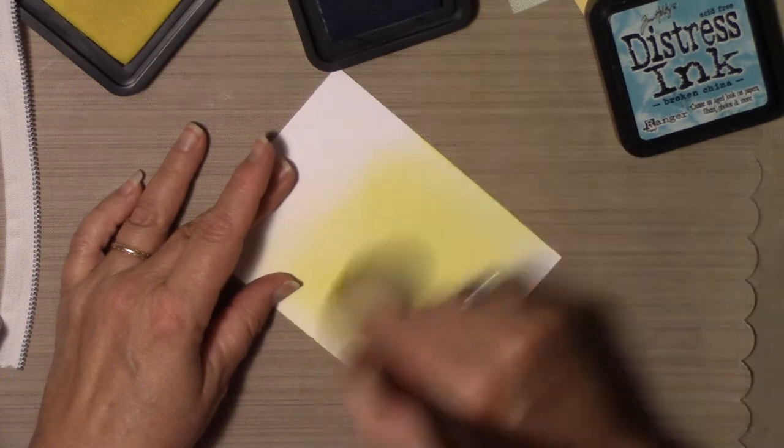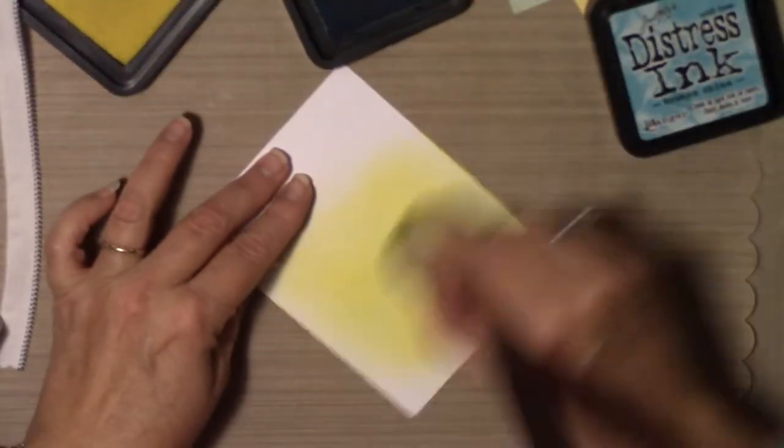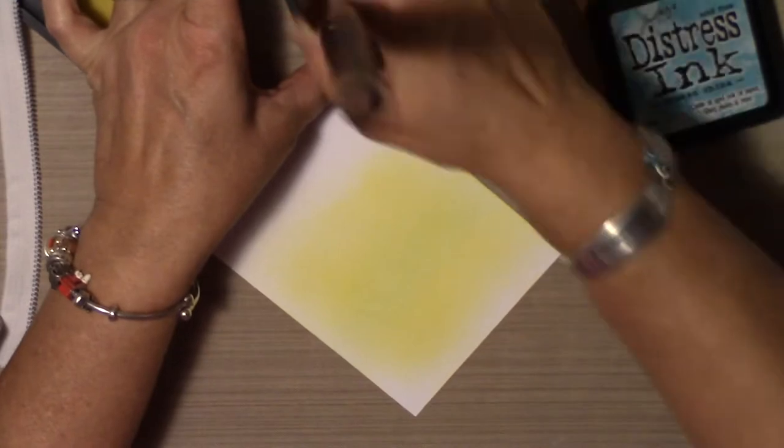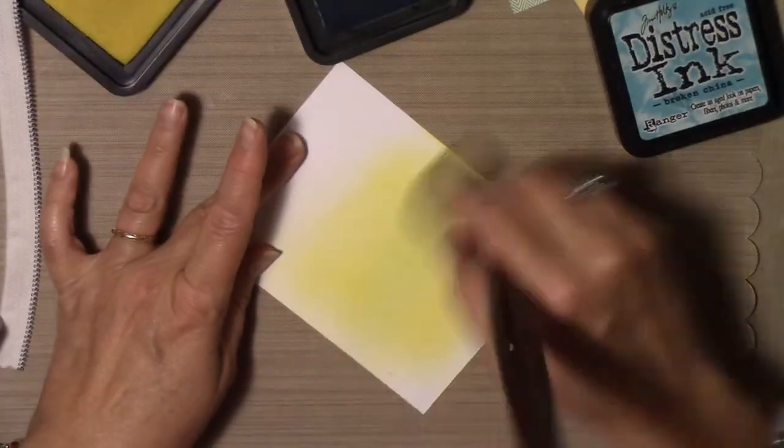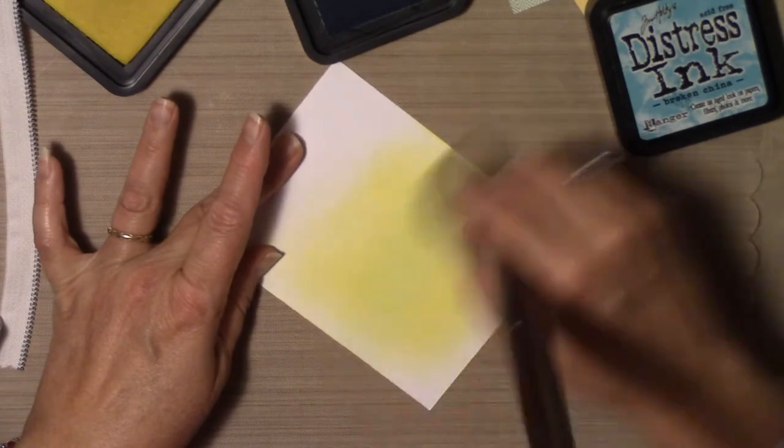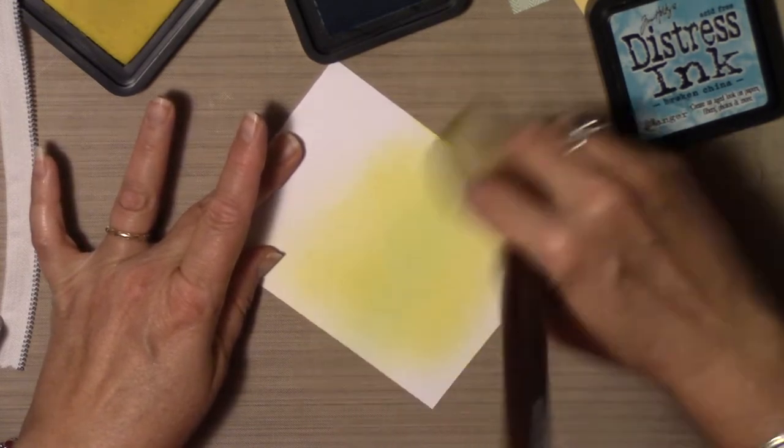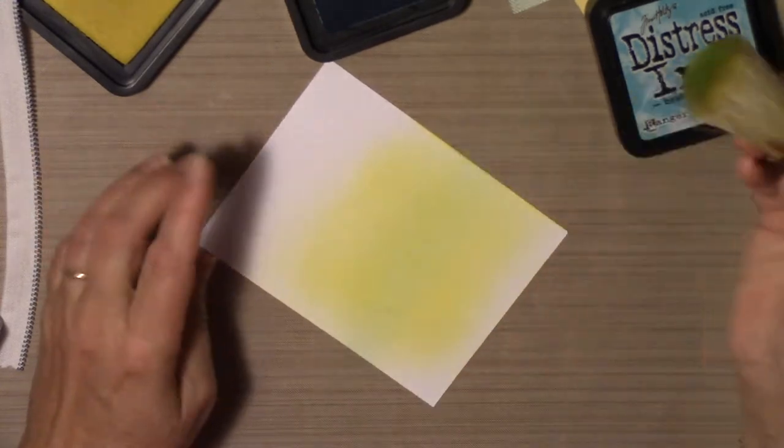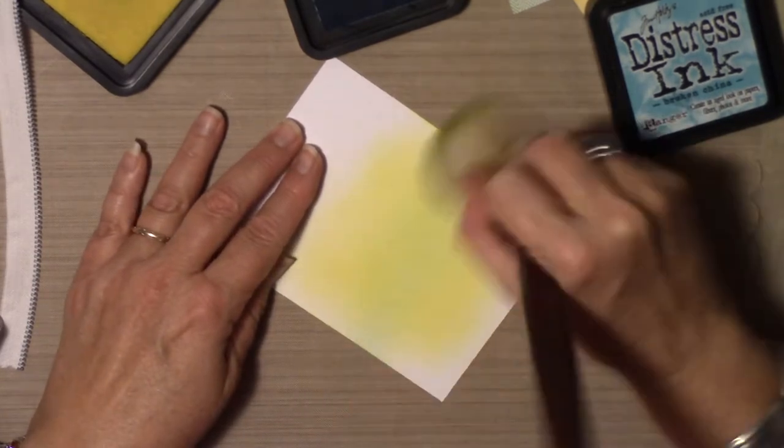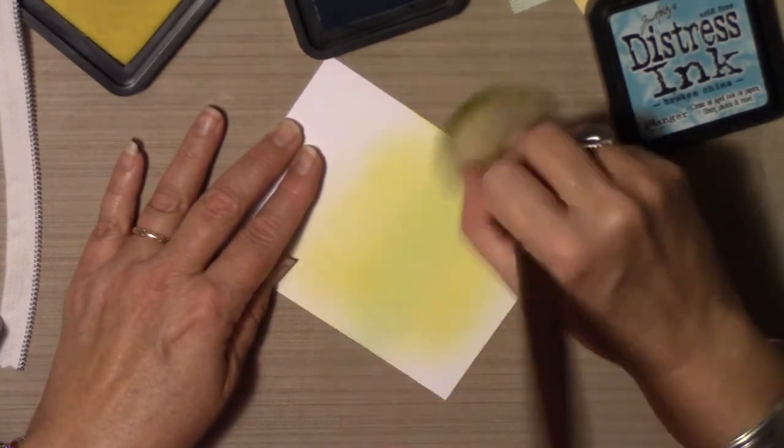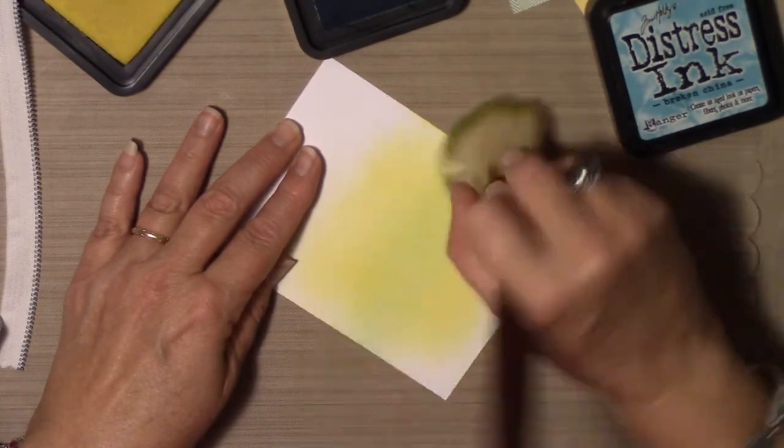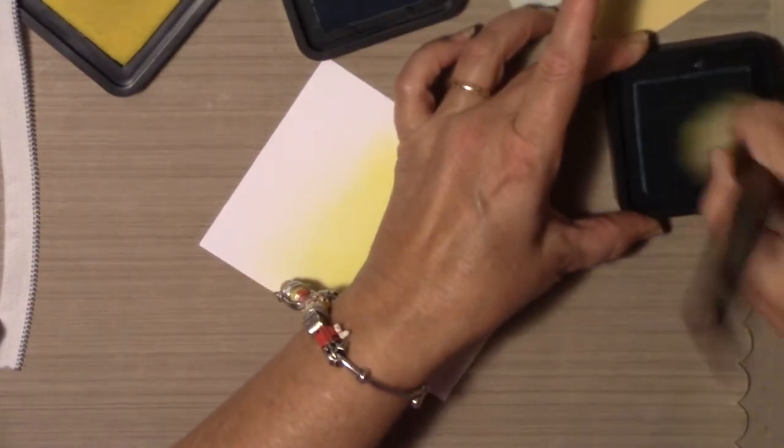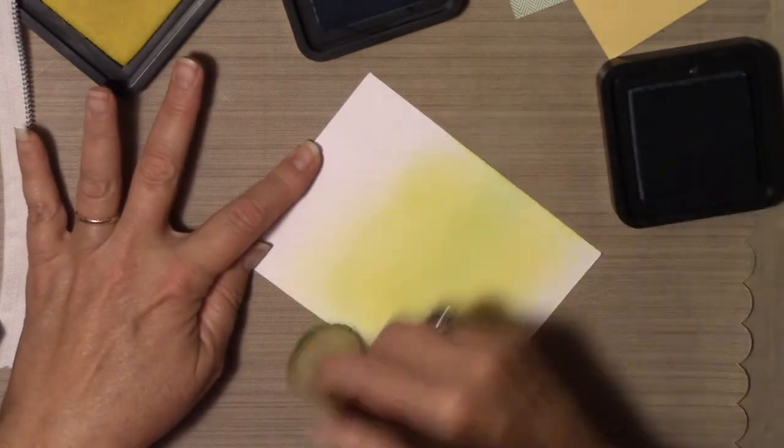And this is where it kind of gets as exciting as watching paint dry. Basically, even though they're blue, yellow and blue make green. So this is going to make a green color. And this is going to make a darker green color.